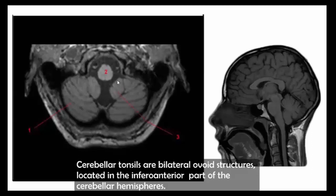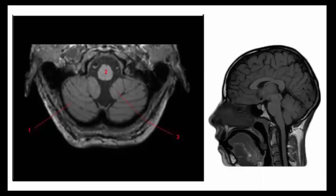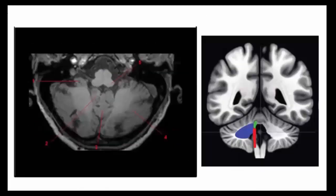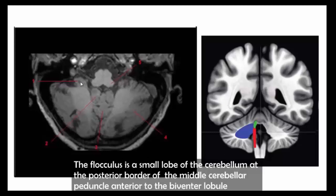This is the cerebellar tonsil. The cerebellar tonsils are bilateral ovoid structures located in the inferior anterior part of the cerebellar hemisphere. This is the flocculus. The flocculus is a small lobe of the cerebellum at the posterior border of the middle cerebellar peduncle, anterior to the biventral lobule.